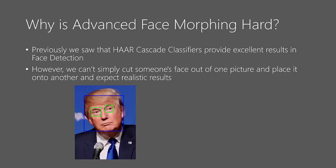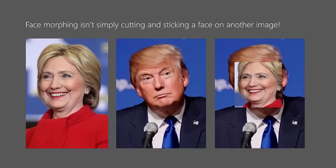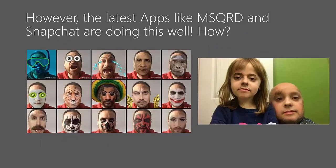Let's first talk about what makes face morphing or face swapping hard. Using Haar cascade classifiers for face detection, we can simply cut someone's face out of an image pretty easily. However, if we wanted to make a face swapper between Hillary and Donald Trump, it would not work at all and would look horrendous. Apps like Masquerade and Snapchat are doing some very advanced face swapping — in fact, Masquerade was bought by Facebook for 35 million US dollars.